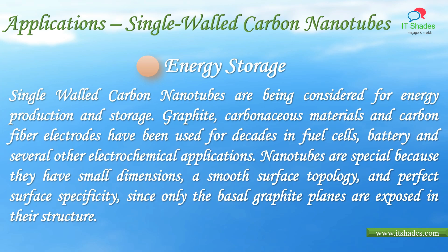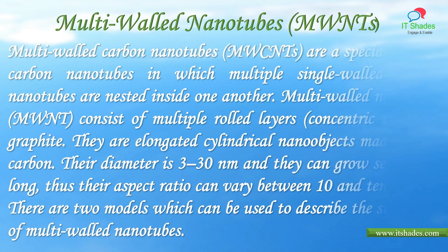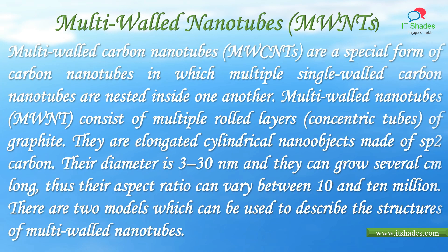That's all for the topic of single-walled nanotubes. Now we will be moving on to multi-walled nanotubes. Multi-walled carbon nanotubes are a special form of carbon nanotubes in which multiple single-walled carbon nanotubes are nested inside one another. They consist of multiple rolled layers of graphite, are elongated cylindrical nano-objects made of sp²-hybridized carbon, with a diameter of 3 to 30 nanometers, and can grow several centimeters long, giving aspect ratios between 10 and 10 million. There are two models used to describe the structures of multi-walled nanotubes.